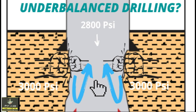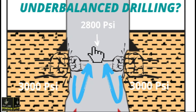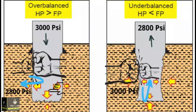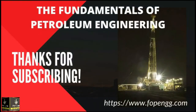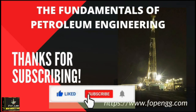Here in the image you can see that the fluid is going towards the wellbore because the formation pressure is greater and the wellbore pressure is lower. In comparison: when the hydrostatic pressure is greater than the formation pressure it is known as over-balance, and when the hydrostatic pressure is lower than the formation pressure it is known as under-balance. I hope this video has cleared your concept about over-balance and under-balance drilling.